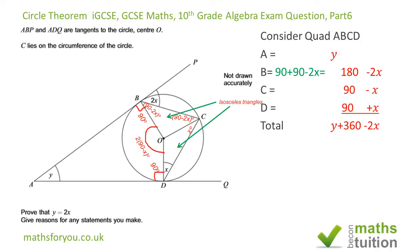That will be the sum of the interior angles of the quadrilateral ABCD, and the sum of the interior angles of any quadrilateral adds up to 360 degrees. The 360s cancel out, so we now have y minus 2x equals 0, therefore y equals 2x.